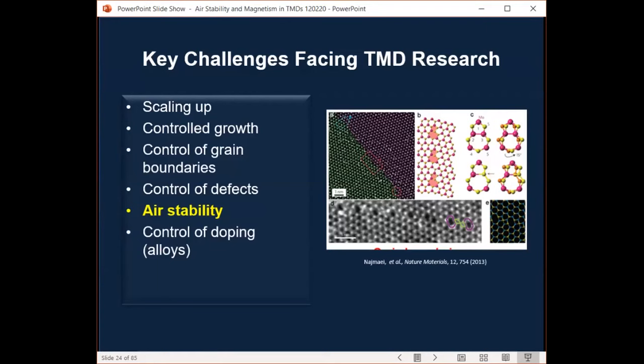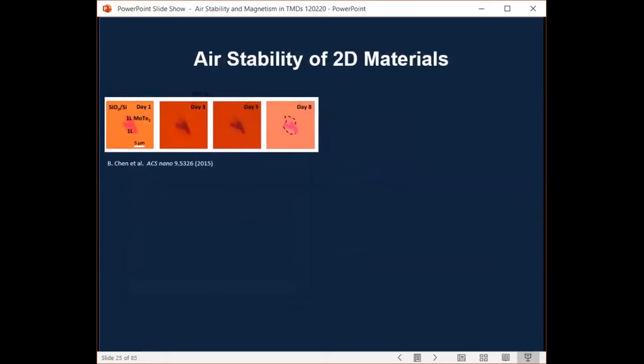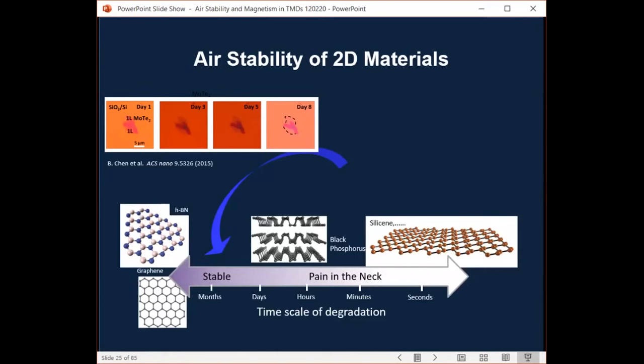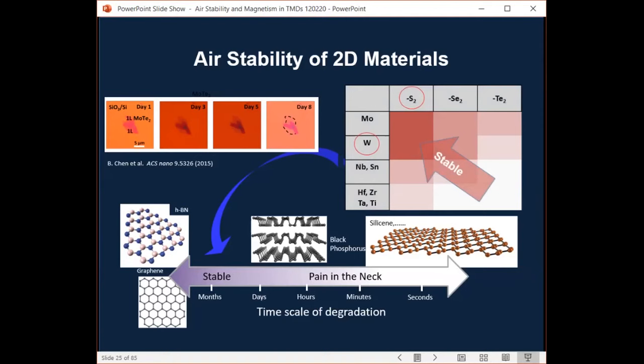So another key challenge would be the control of defects and useful parallels can be drawn with gallium arsenide, where control over materials quality was achieved over decades of work. So one of the critical issues associated with defects is temporal degradation. This degradation of TMDs is due to in-air oxidation. So you can see as an example here that the exfoliated molybdenum ditelluride is gone in a week in the air through the oxidation. And defect sites such as vacancies or grain boundaries in TMDs are known to promote in-air oxidation of the materials. While graphene is relatively air-stable, dealing with black phosphorus and silicene kind of materials would be a pain in the neck due to their instability there.